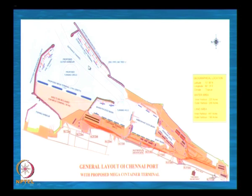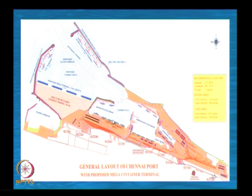The precaution normally taken is: whenever a cyclonic storm occurs, the vessels berthed inside the harbor basin are asked to go out. Because when harbor resonance takes place, the motion of the vessel is very large — it may touch the bottom of the seaway. What they do is take the vessel from the harbor basin to deep waters of more than 30 meters water depth, because the harbor depth is only about 14 to 18 meters. When the vessel goes outside to water depths of more than 40 to 50 meters, even if it is going up and down it will not touch the bottom.